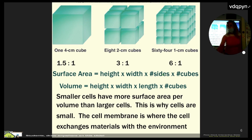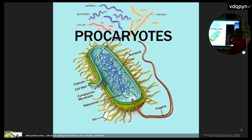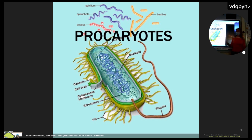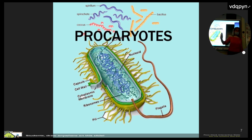Then we started talking about prokaryotic cells and their structures. Prokaryotic cells have a single circular chromosome. They don't have membrane-enclosed organelles — the area where the DNA hangs out is called the nucleoid region. They do have ribosomes, but that's not a membrane-enclosed organelle. They can also have additional DNA called plasmids — little extra rings of DNA that genetic engineers like to manipulate.